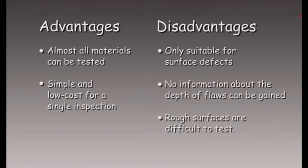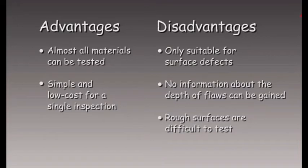Finally, the pros and cons at a glance. Advantages of this test method are that almost all materials can be tested and the method is simple and low cost for a single inspection. Disadvantages are that it is only suitable for surface defects, no information about the depth of flaws can be gained, and rough surfaces are difficult to inspect.